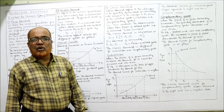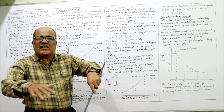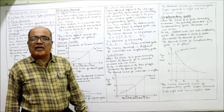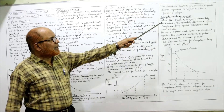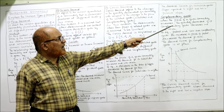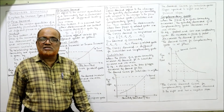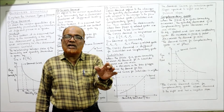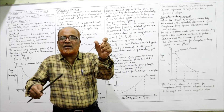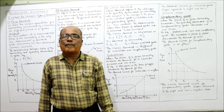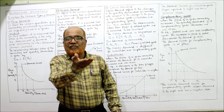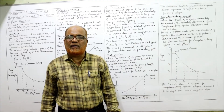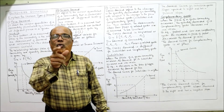Complementary goods are those which are simultaneously required. When the price of a given commodity increases, the quantity demanded of its complementary good decreases, and vice versa. This is an inverse relationship. For example, petrol and car are complementary goods — if we have only petrol but no car, it is useless, and if we have a car but no petrol, the car is useless.